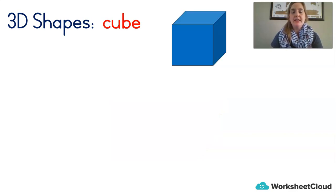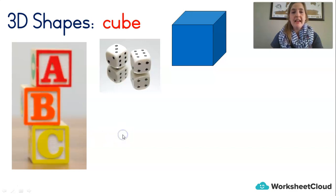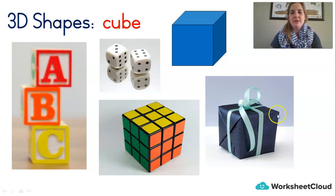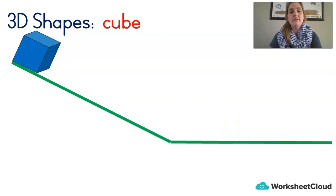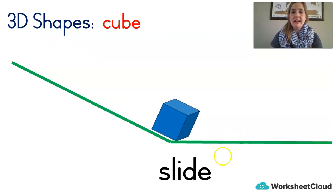Can you think where you might have seen a cube around the house? Maybe if you've got a younger brother or sister, you've got these kind of blocks — those are cubes. How about dice? Those are cubes. A Rubik's cube has different colours on the sides — this is in the shape of a cube. And a present — that's also in the shape of a cube. What do you think would happen if we put this cube on a hill? Let's see — there it goes, it just slides right down. A cube slides because it has a flat side. It doesn't roll; it slides.